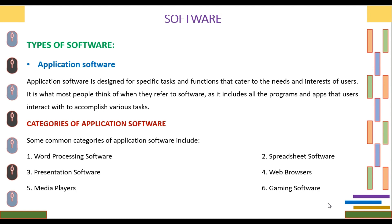Application software is divided into some common categories, including Word Processing Software, Spreadsheet Software, Presentation Software, Web Browsers, Media Players, and Gaming Software. We will now see all these categories in detail.